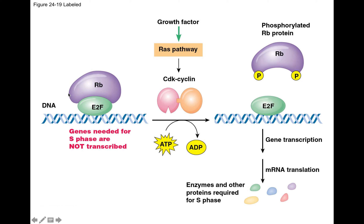E2F can then be active in transcribing genes that are required for duplicating your DNA. Normally RB is inhibiting this process. When you do want to duplicate your DNA — such as when you want to grow — RB is stopped from inhibiting E2F by virtue of being phosphorylated. If this pathway were on at an inappropriate time, that could cause cancer or uncontrolled cell growth.